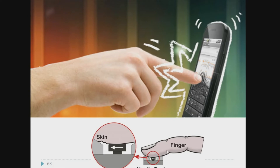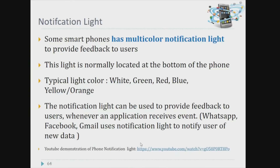This is what we call a haptic device. Some mobile phones provide haptic feedback and some do not. Next is the notification light. Some smartphones have a multi-color notification light to provide feedback to users. This light is normally located at the bottom of the phone, and it switches on for notifications.